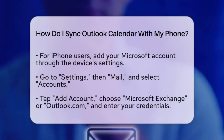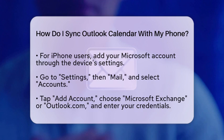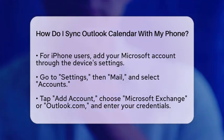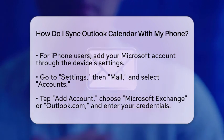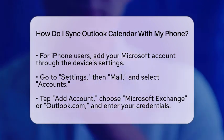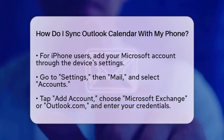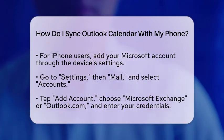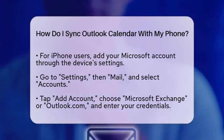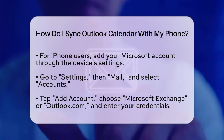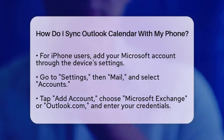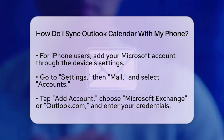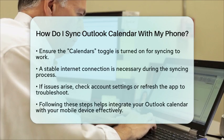If you are using an iPhone, you can sync your Outlook calendar by adding your Microsoft account directly to your device's settings. Go to the Settings app, scroll down to Mail, and select Accounts. Tap on Add Account, choose Microsoft Exchange or Outlook.com, and enter your email address and password. Once your account is set up, make sure the toggle for Calendars is turned on. This will allow your Outlook calendar events to appear in the iPhone's native calendar app.